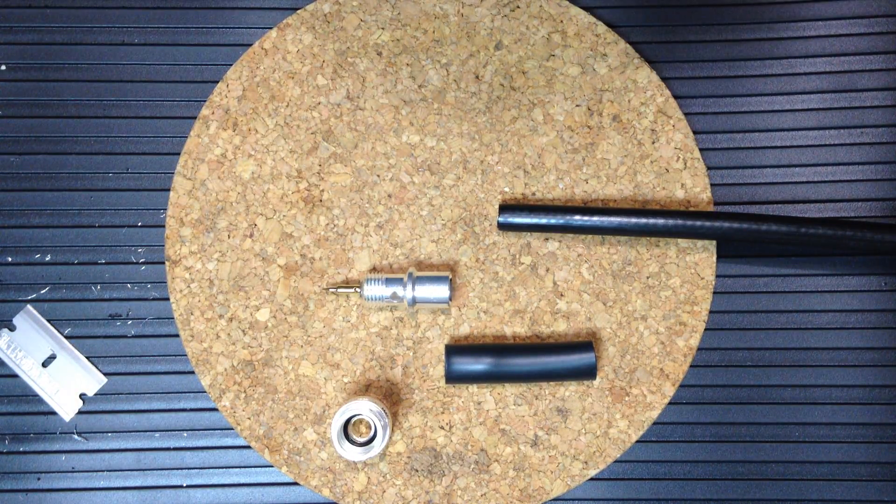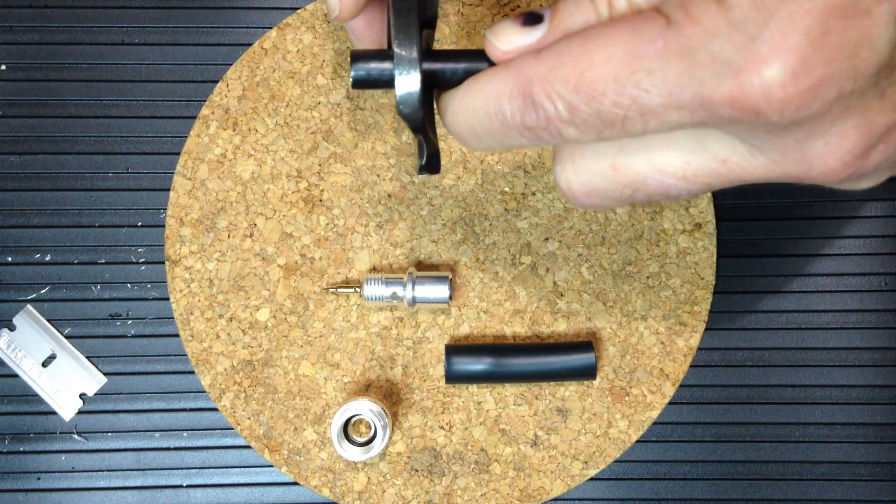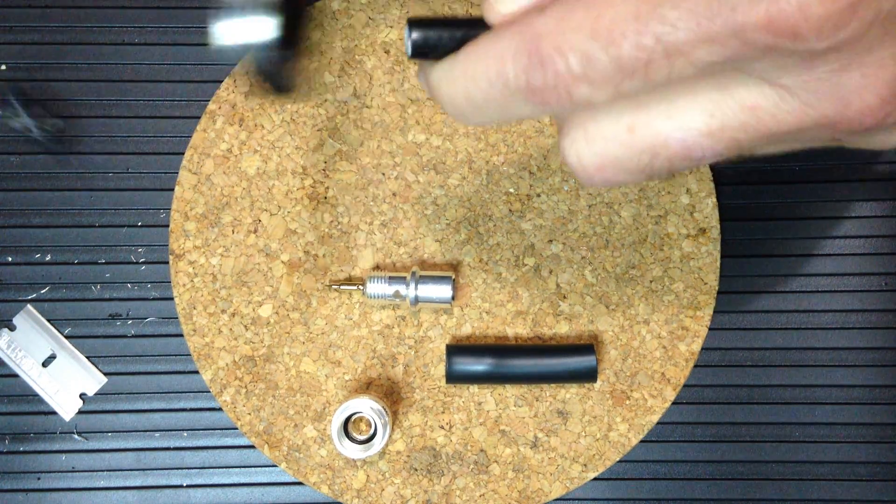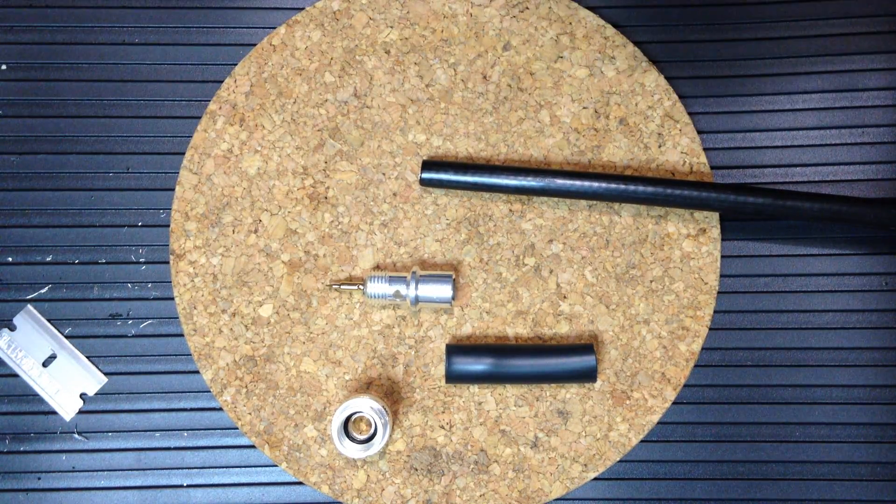We'll begin the installation by using coax cutters to make a clean square round cut in our coax.